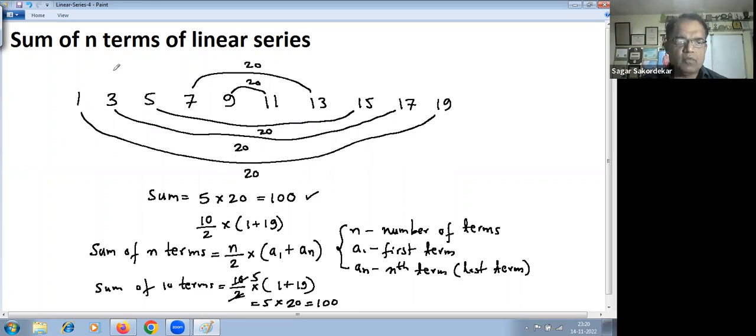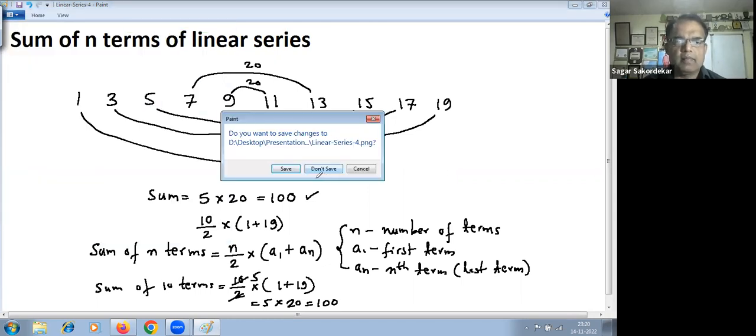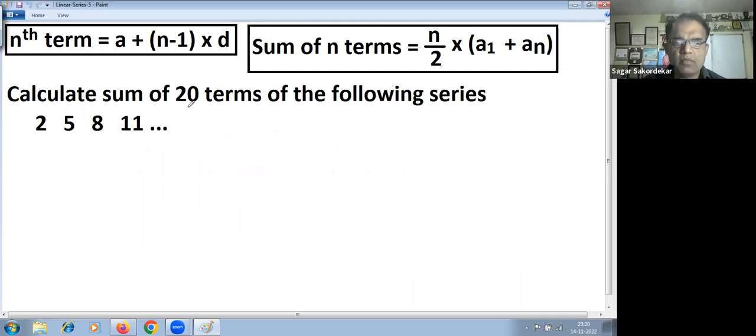Let's take more examples. Calculate sum of 20 terms of the following series: 2, 5, 8, 11, and so on. So you can note here that you get the next term by adding 3. 2 plus 3 is 5, 5 plus 3 is 8, 8 plus 3 is 11.